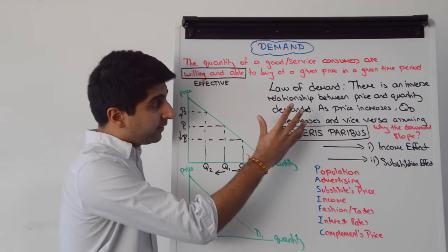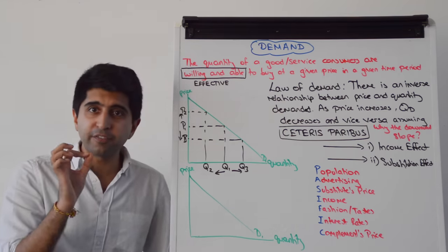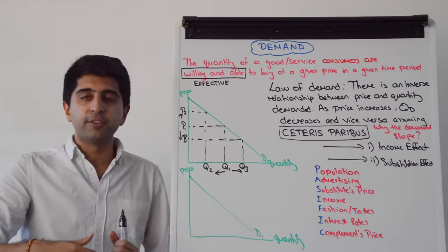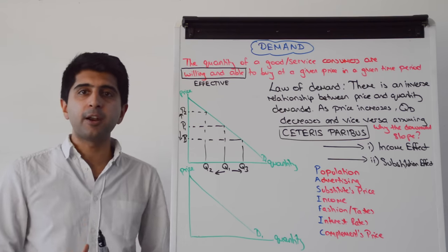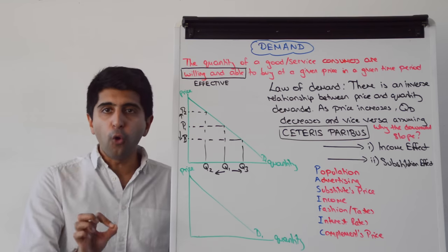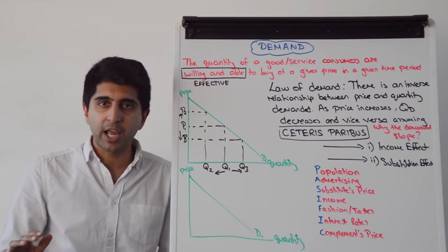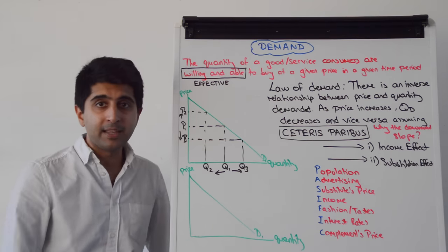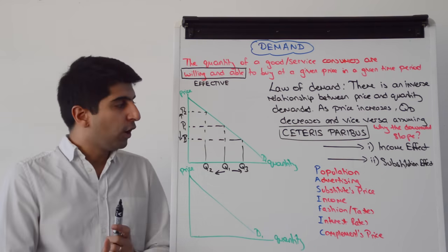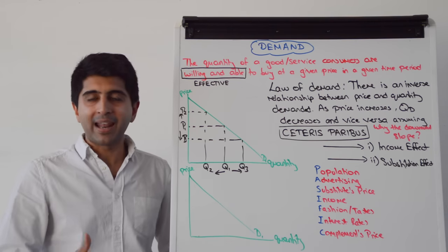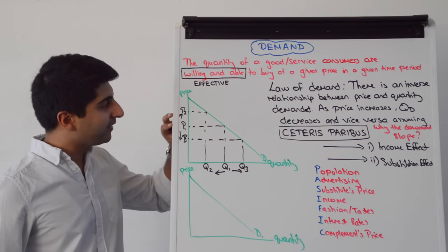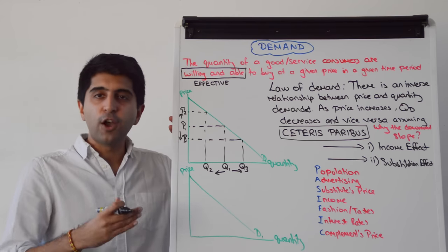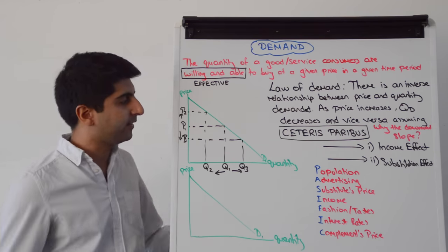To understand and derive this law, we make a fundamental assumption. We assume Ceteris Paribus when the price changes. Ceteris Paribus means all other factors remain unchanged — all other things remain equal. By having that assumption, we can get to the law of demand as a theory, isolating the impact of price changes and seeing exactly the impact on quantity demanded.